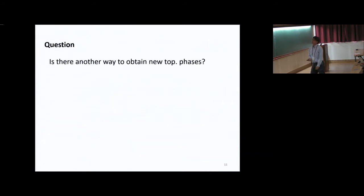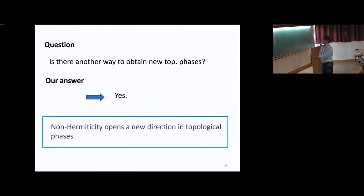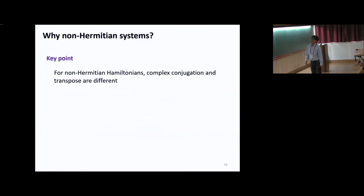Now I'd like to ask: by imposing crystal symmetries, we can obtain a rich structure of topological phases. Is there another way to obtain a new topological phase? The answer is yes — non-Hermiticity has opened a new direction in topological phases. I'd like to explain why non-Hermitian systems enrich topological phases.